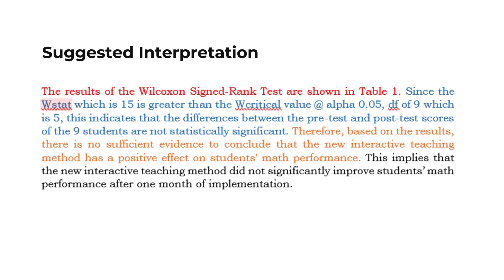Let us dissect the suggested interpretation. The text in red is our table reading: 'The results of the Wilcoxon Signed-Rank test are shown in Table 1.' Table reading is one of the most important elements. The text in blue is our findings: 'Since the W-stat, which is 15, is greater than the W-critical value at alpha 0.05 with degrees of freedom of 9, which is 5, this indicates that the differences between the pre-test and post-test scores of the nine students are not statistically significant.'